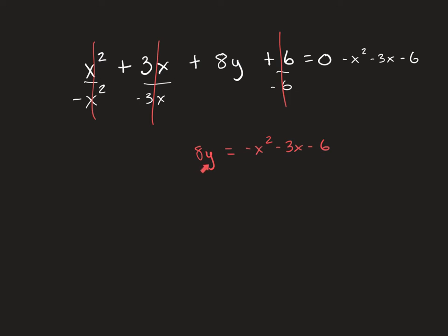Now I'm almost to the point where my y is by itself, but I'm not there yet. So I've got to divide by 8 on everything. And so I have y equals negative x squared over 8 minus 3x over 8 minus — and the 6/8 can be reduced to 3/4.